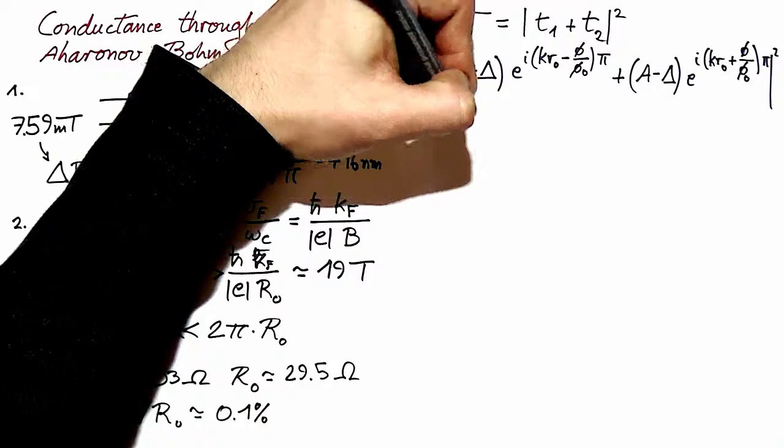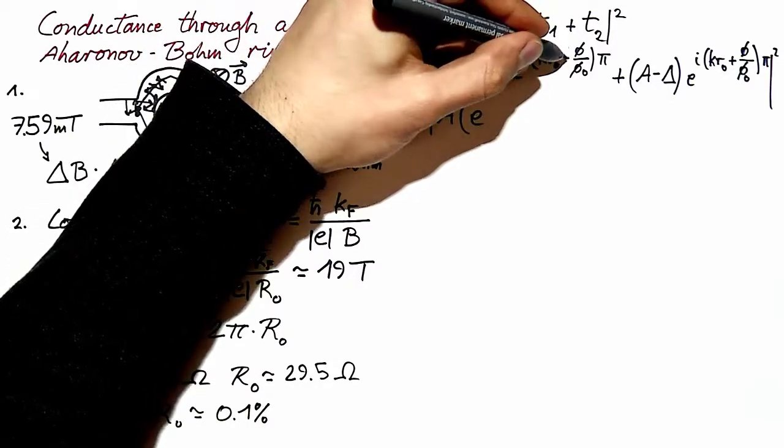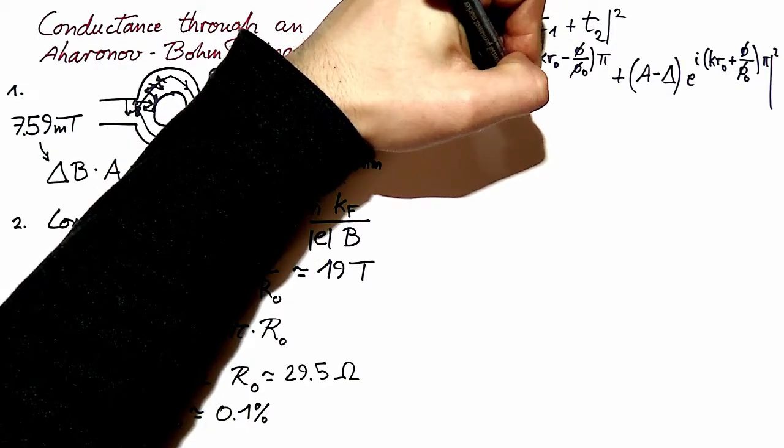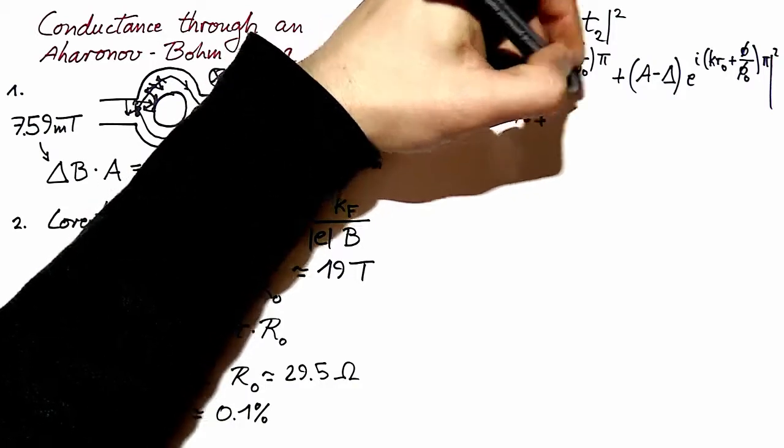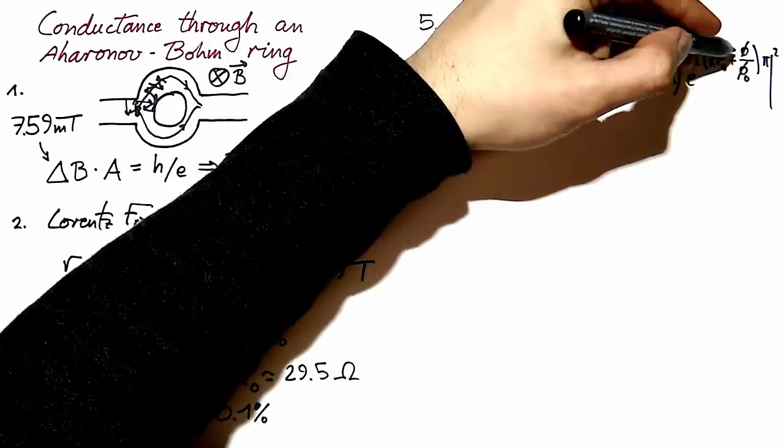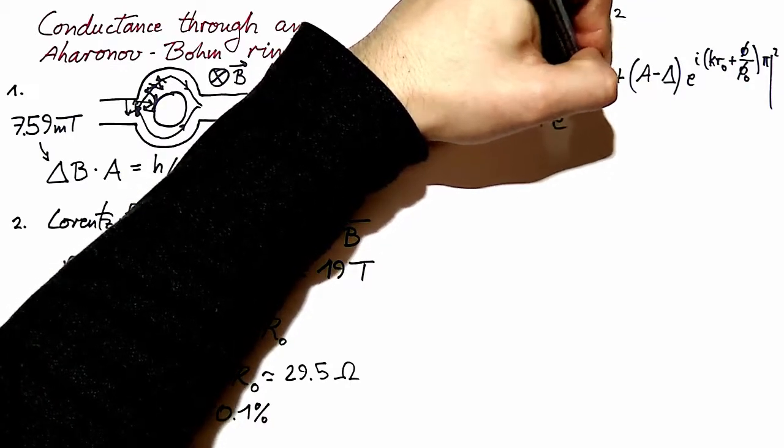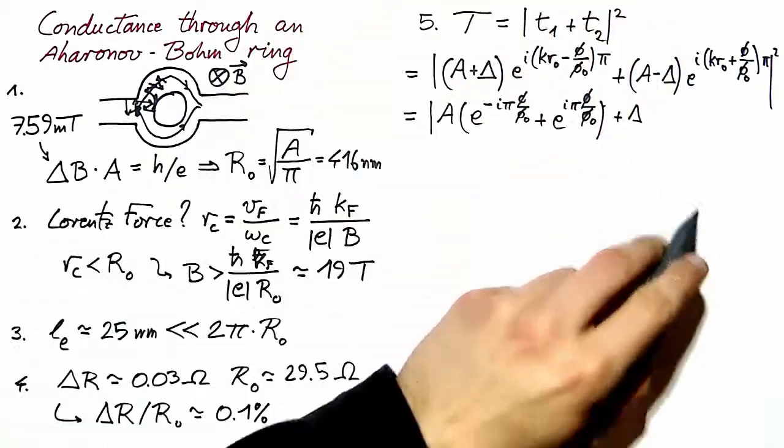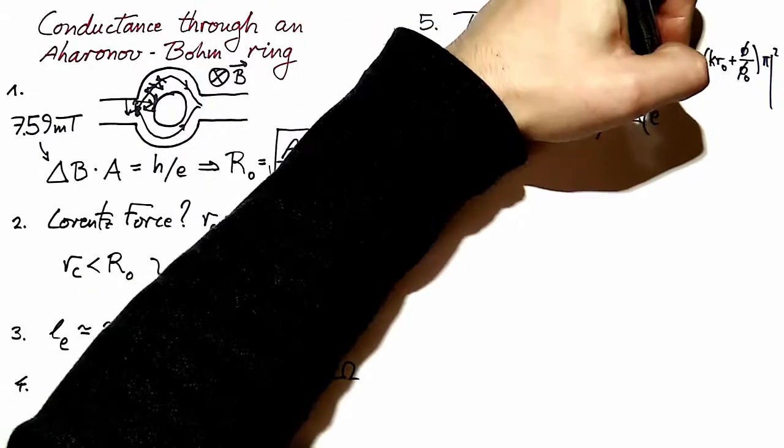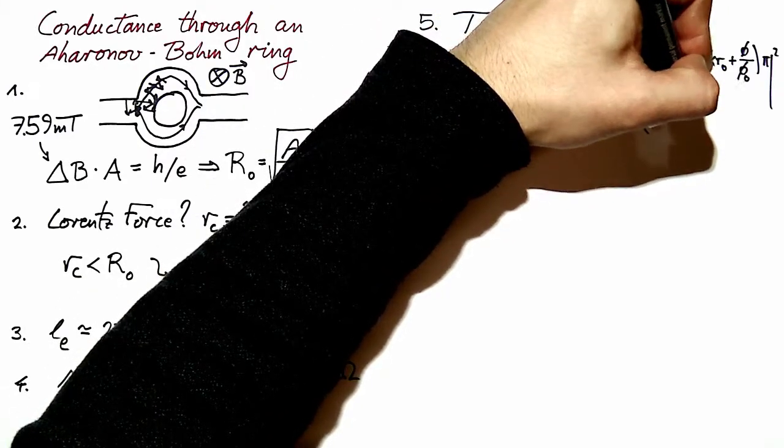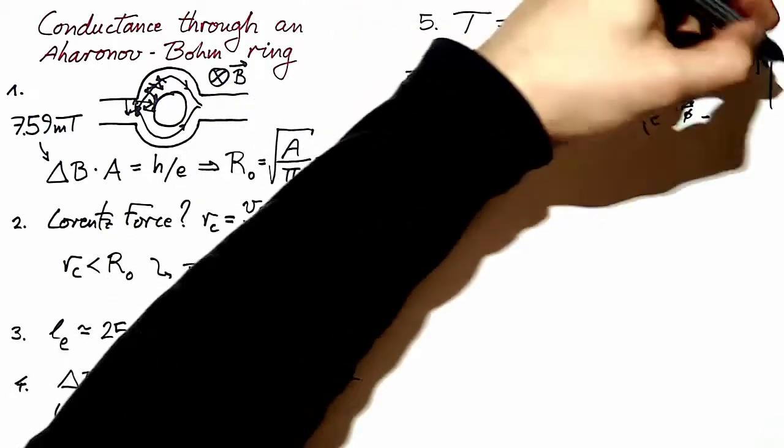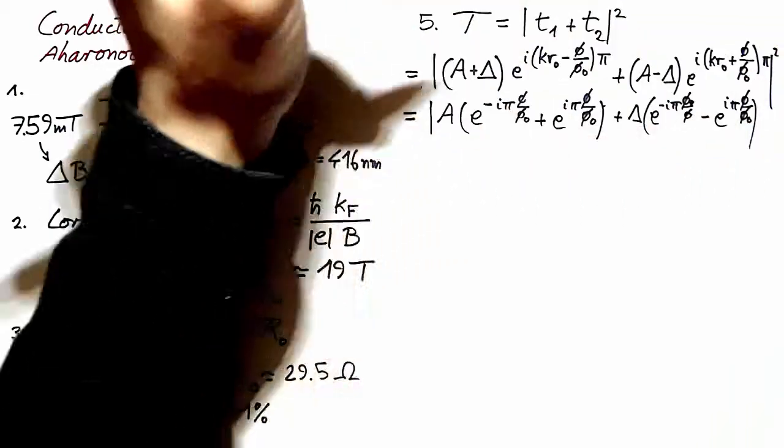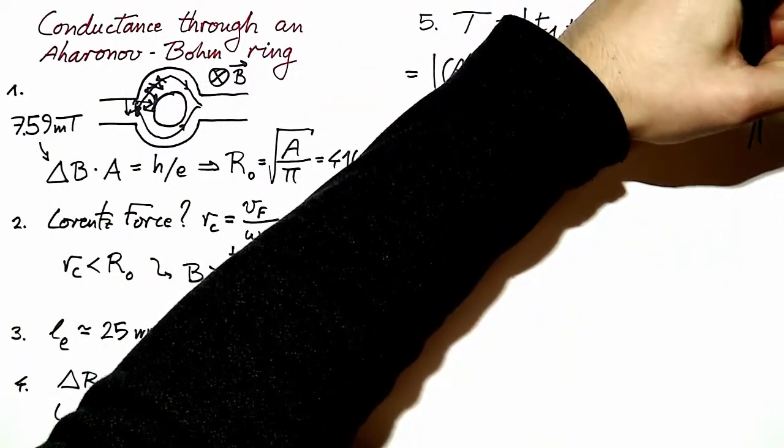We have A multiplying the term with negative AB phase plus the opposite phase term, and for Δ we will see this minus sign up here.